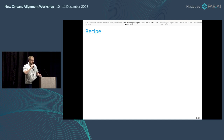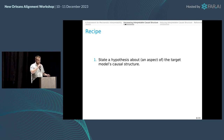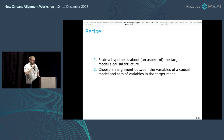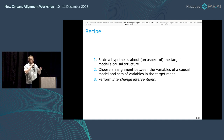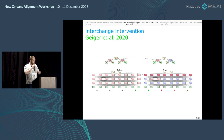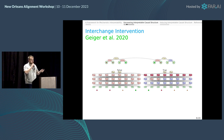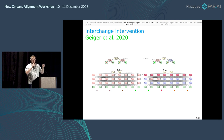Next: uncovering interpretable causal structure. We state a hypothesis about how a model is solving a task, find an alignment between variables in the high-level model and representations in the neural network, then perform interchange interventions on both models and see whether they have the same behavior. An interchange intervention — also known as activation patching — takes a representation and sets it to the value it would take if a different input were provided. Crucially, unlike activation steering or jittering perturbations, we set representations to values they actually take for some real input being provided to the network.